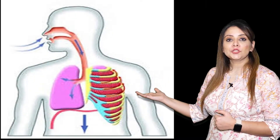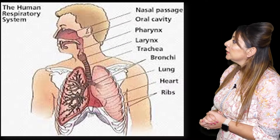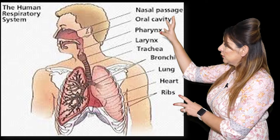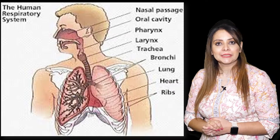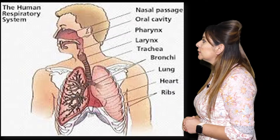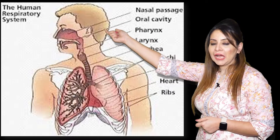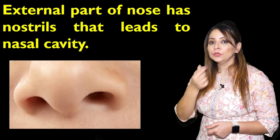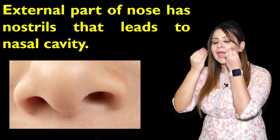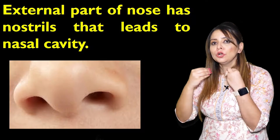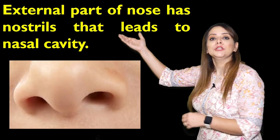Here we have a picture which shows the respiratory tract present in human beings. You can see that these highlighted organs, lined up in sequence, form the respiratory tract. The first part from where the air enters is the nostrils — the openings present in the nose through which air can enter. Though air can also enter through the mouth, the actual passage meant for respiration is through the nostrils.